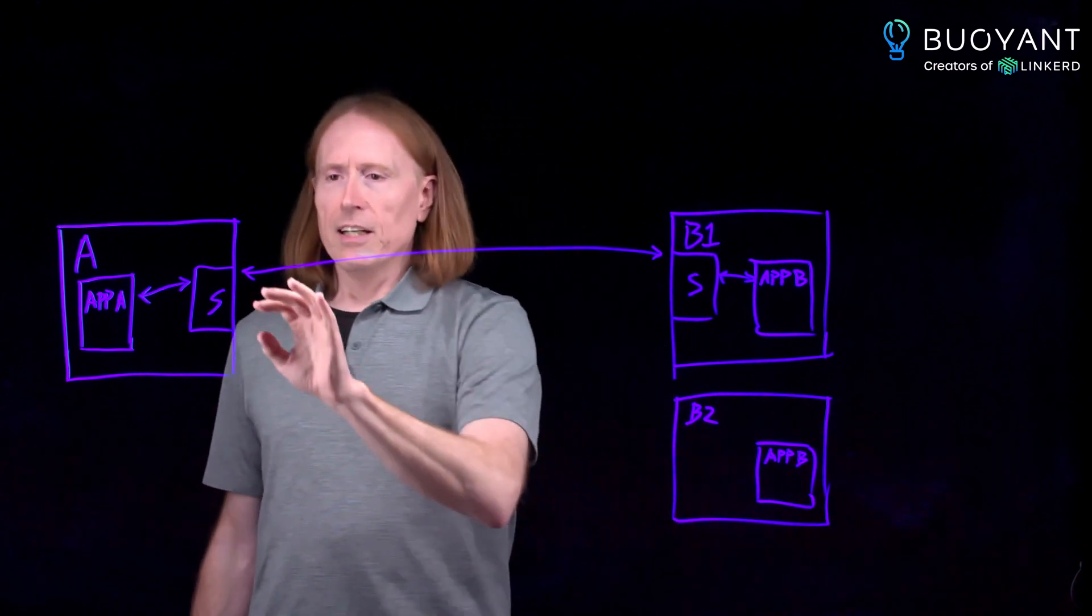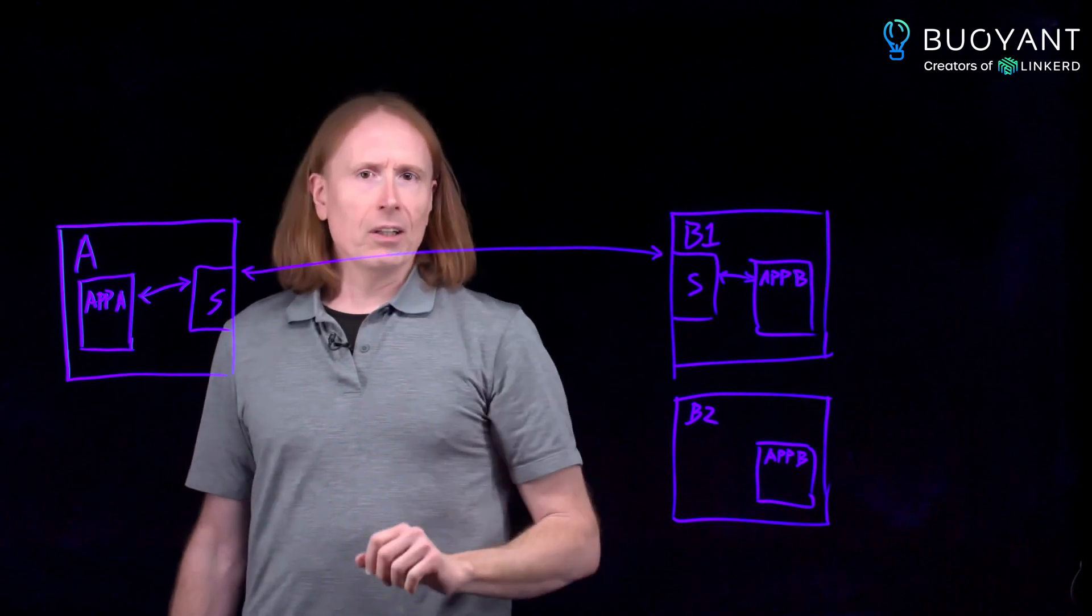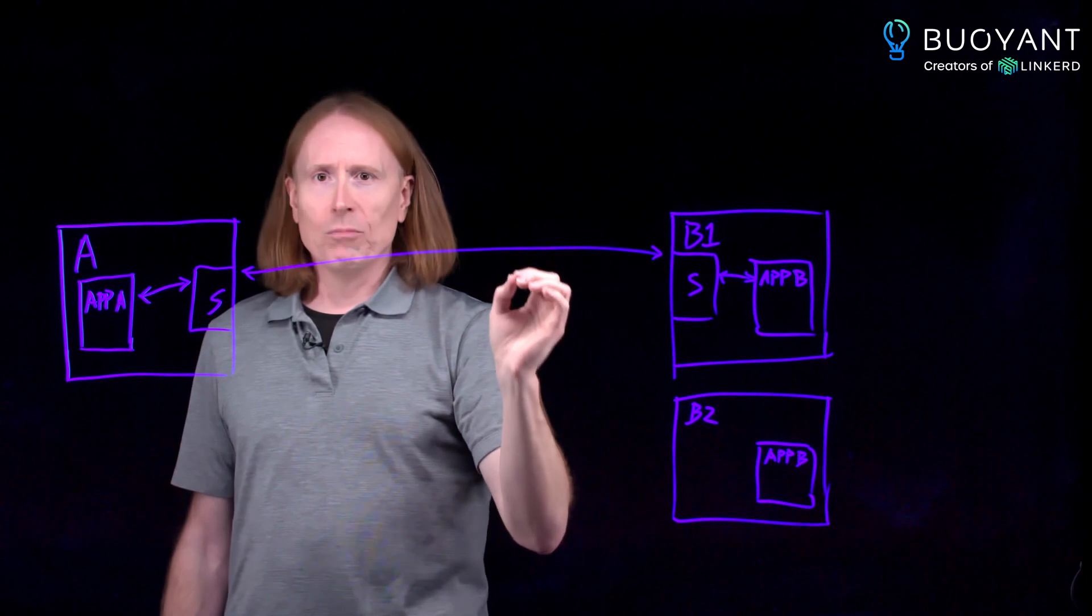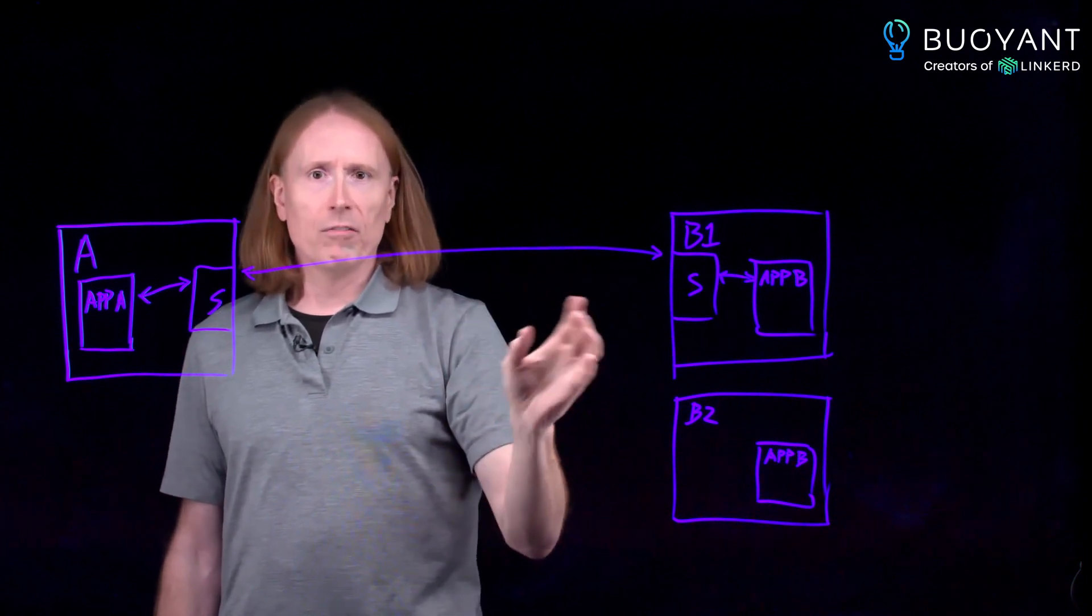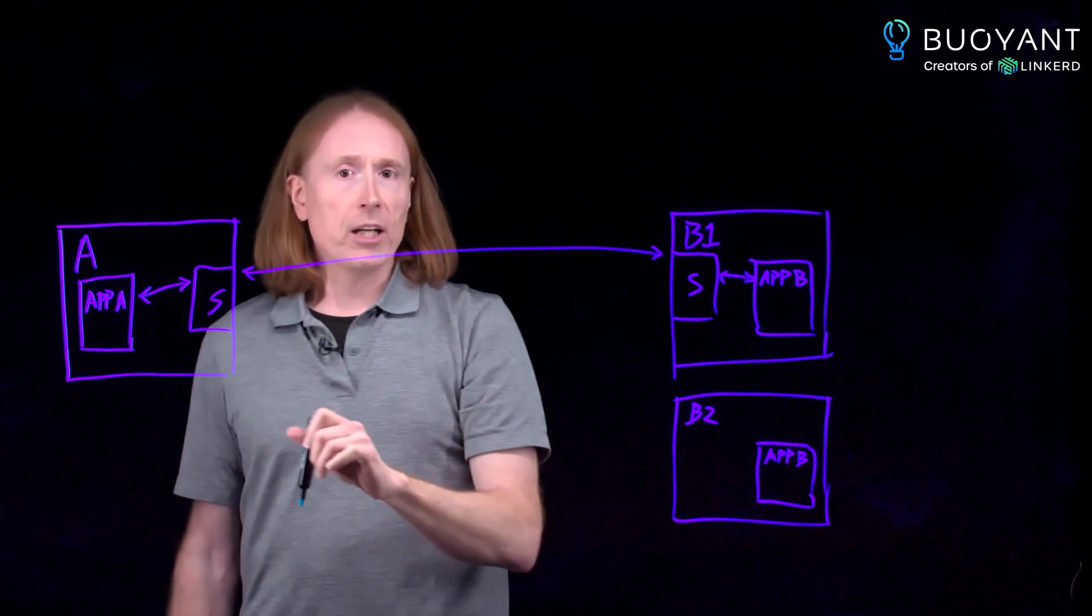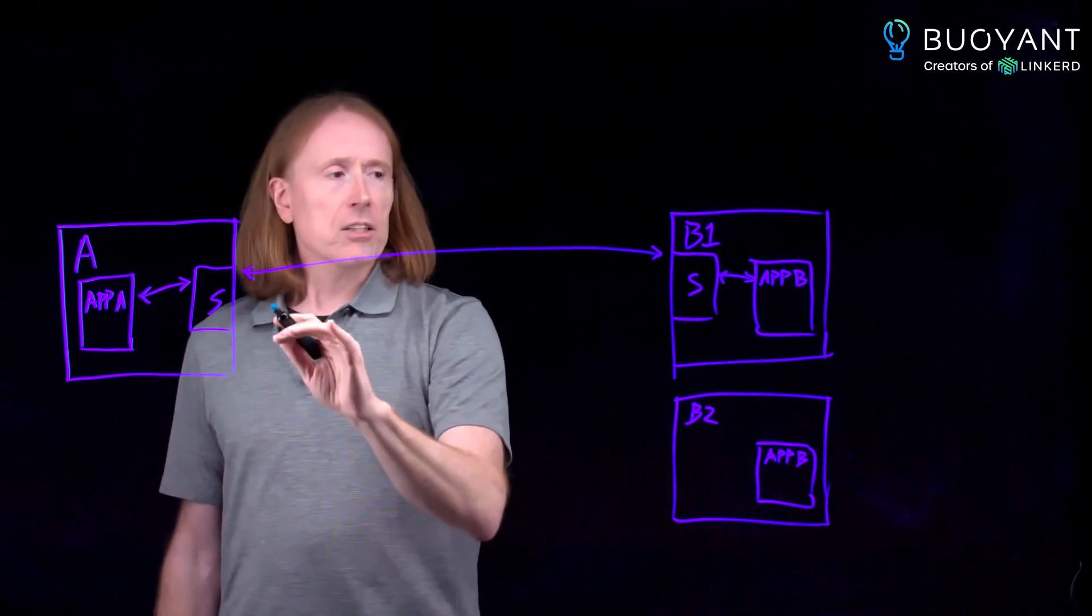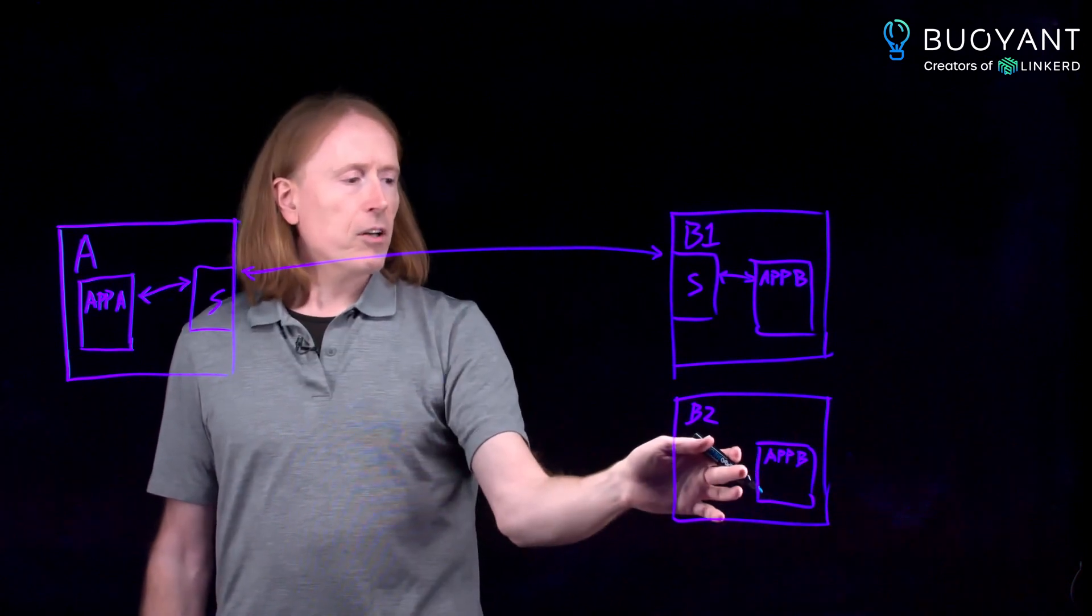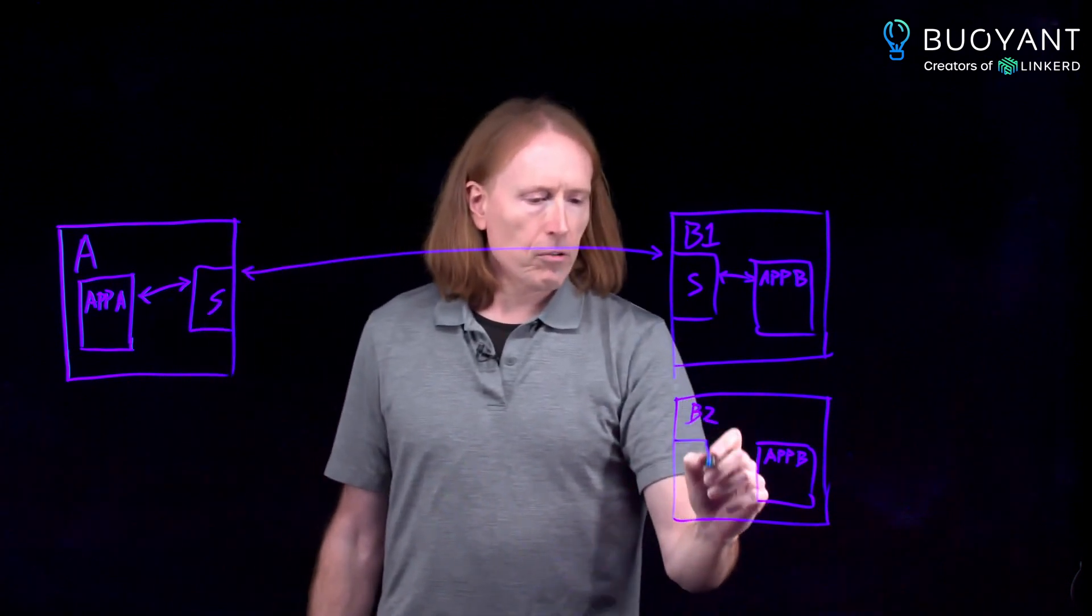So the first way that the mesh adds reliability is that this connection here in the middle is actually a full-duplex, multiplexed stream of individual requests. The sidecars will look at these requests, and they can decide to do things like routing one request to this pod. They can decide to do things like routing the next request down here through its sidecar.